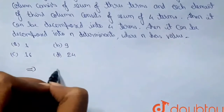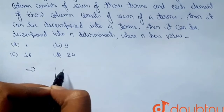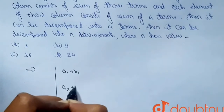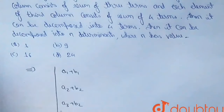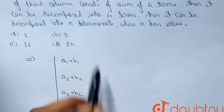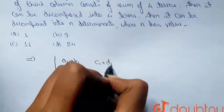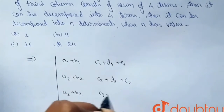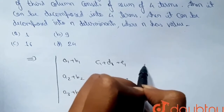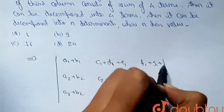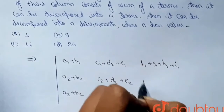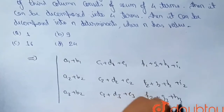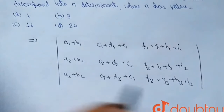Let me show how the determinant is set up. The first column has a sum of two terms each: a1 plus b1, a2 plus b2, and a3 plus b3. The second column is a sum of three terms: c1 plus d1 plus e1, c2 plus d2 plus e2, and c3 plus d3 plus e3. The third column has a sum of four terms: f1 plus g1 plus h1 plus i1, and similarly for the second and third rows.